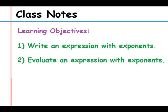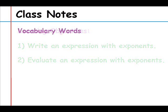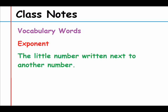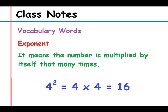To achieve the learning objectives, first we have to look at a few vocabulary words. The first one is exponent. An exponent is the little number written next to another number — for example, 4 with a small 2 next to it. The 2 is the exponent, and it means the number is multiplied by itself that many times. So 4 with an exponent of 2 equals 4 times 4, which is 16.